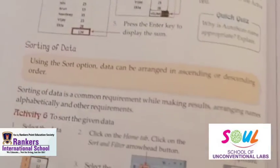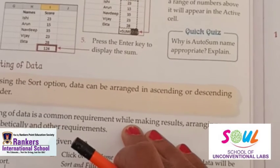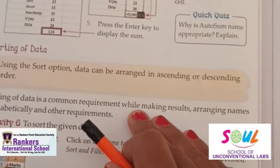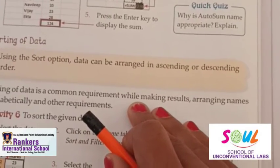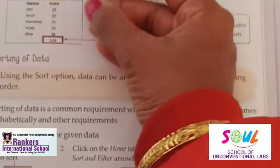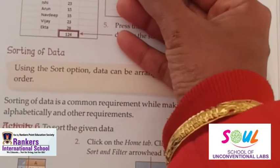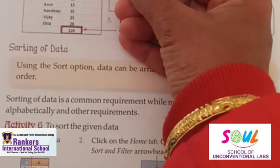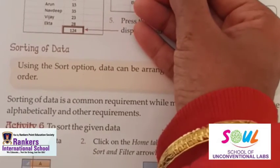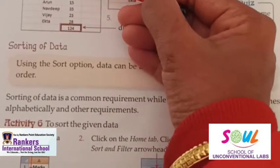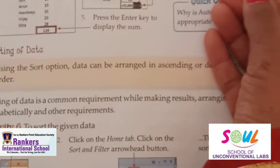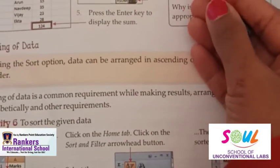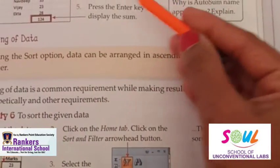Now, what is AutoSum? The AutoSum option provides an easy and quick method to calculate the sum of a selected range of data — you do not need to enter a formula manually. For example, with names and scores entered, click on the empty cell after the last entry, click on the Home tab, and click on the AutoSum option.